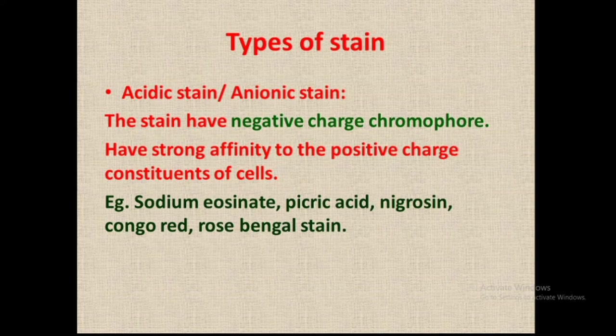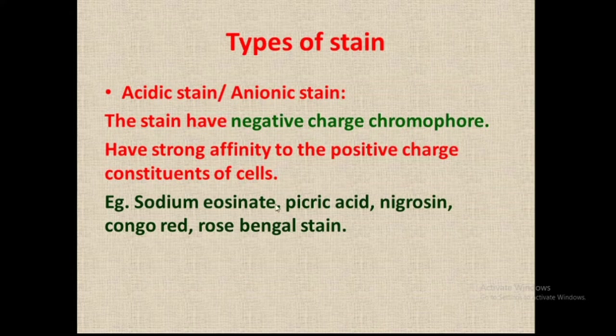There are two basic types of stain: acidic stain and basic stain. The acidic stain is an anionic stain — that is, a negative charge stain — because the acidic stain has a negative charge chromophore. These are anionic stains, meaning they have affinity for the positively charged components or constituents of a cell, because the negative charge chromophore can bind to the positive charge constituents.